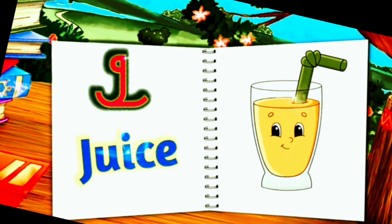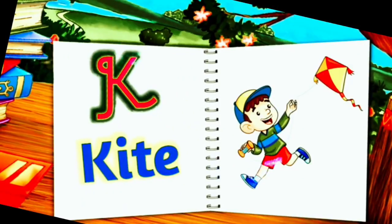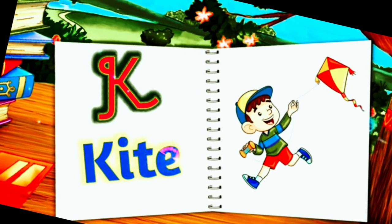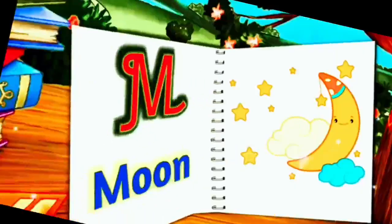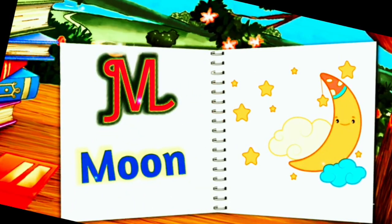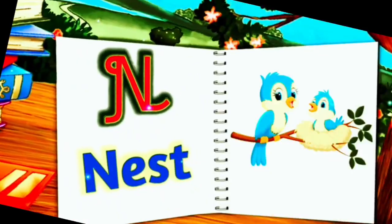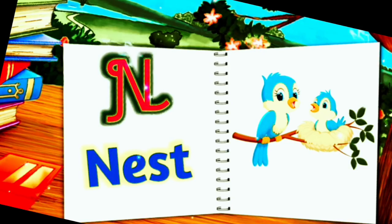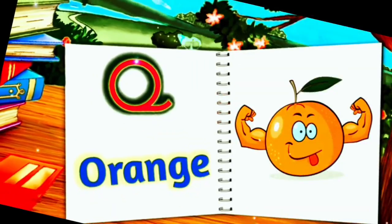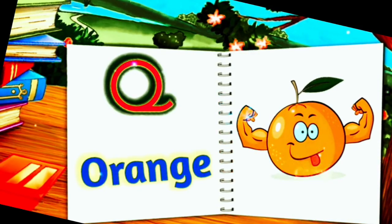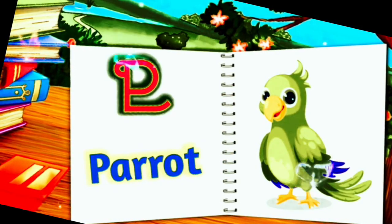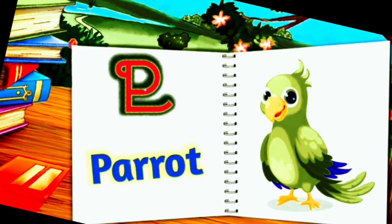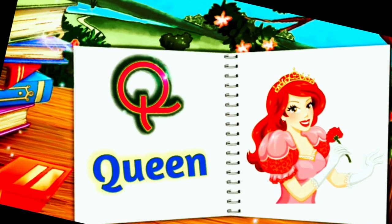K for Kite — K-I-T-E, Kite. L for Lemon — L-E-M-O-N, Lemon. M for Moon — M-O-O-N, Moon. N for Nest — N-E-S-T, Nest. O for Orange — O-R-A-N-G-E, Orange. P for Parrot — P-A-R-R-O-T, Parrot. Q for Quail — Q-U-A-I-L, Quail.